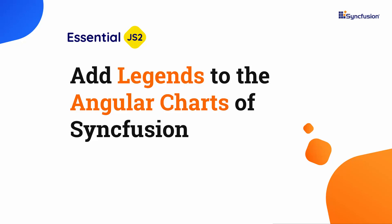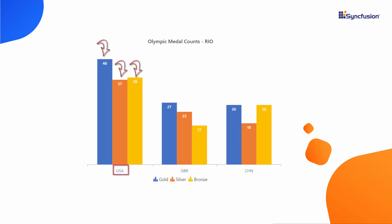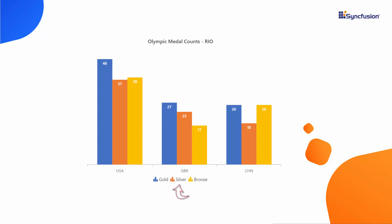For example, in this column chart you can see multiple categorized data points for each value on the x-axis. In this case you will need to differentiate those multiple x values with a unique color and name. Here you can see a chart example that shows a legend explaining the colors assigned to different medals like Gold, Silver, and Bronze.